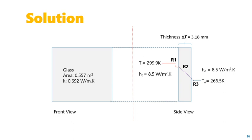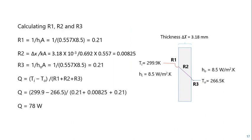For the solution, we visualize the problem: the glass has area 0.557 m² and thermal conductivity 0.692 W/(m·K). From the side view, inside temperature is 299.9 K, outside temperature is 266.5 K, heat transfer coefficient on both sides is 8.5 W/(m²·K), and thickness is 3.18 mm. R1, R2, R3 are the resistances offered by the fluid layers and the glass material.